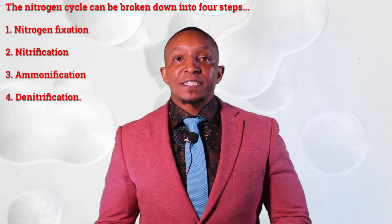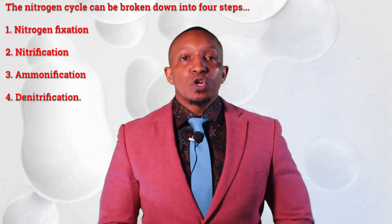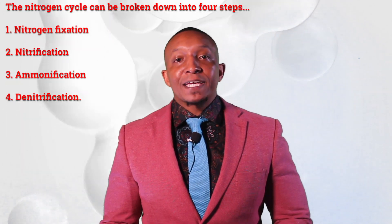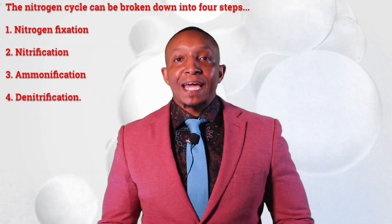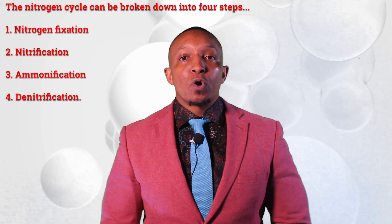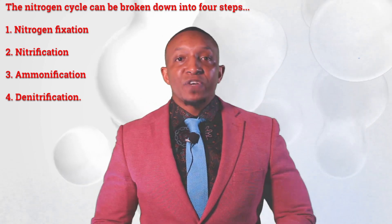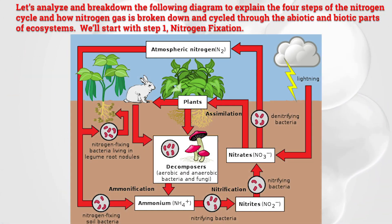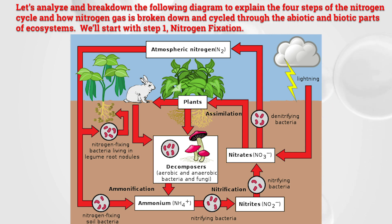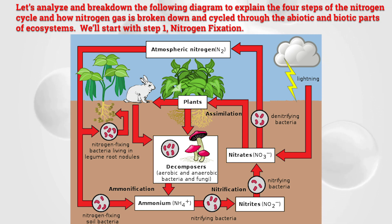The four steps are: one, nitrogen fixation; two, nitrification; three, ammonification; and four, denitrification. Let's analyze and break down the following diagram to explain how nitrogen gas is broken down and cycled through the abiotic and biotic parts of ecosystems.